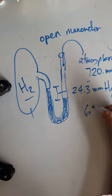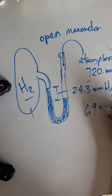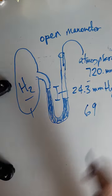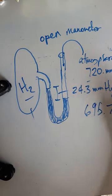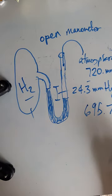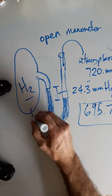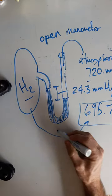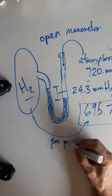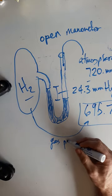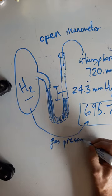You'd have 695.7 millimeters, assuming I did my quick subtraction right, but the pressure of the gas would be 695.7 millimeters of mercury.